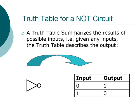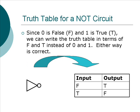Since zero means false and one means true, we could fill in the truth table with F and T—F for false and T for true. Either way is correct, and either way is in very common use. Just whatever makes most sense to you, whatever is most convenient, whatever is most appropriate for the particular use that you're trying to put the table to.